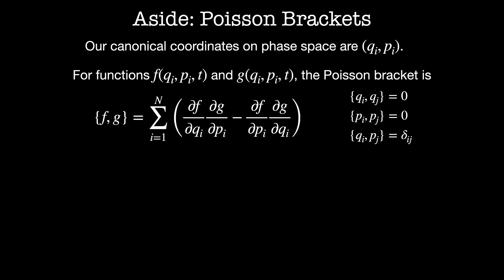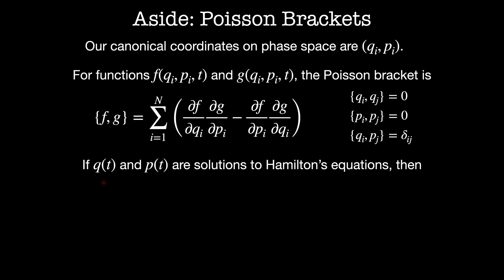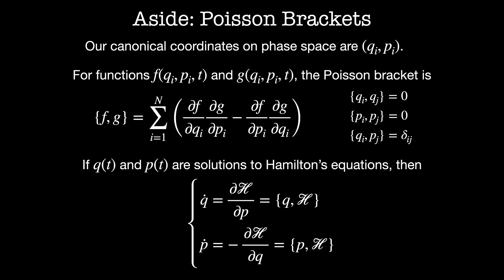If the functions q(t) and p(t) are solutions to Hamilton's equations, then q dot equals dH/dp and p dot equals minus dH/dq by definition. The first equation here is equal to the Poisson bracket of q with the Hamiltonian: plugging in q for f and H for g, dq/dq times dH/dp is just dH/dp, and the second term dq/dp times dH/dq is zero. The second equation is equal to the Poisson bracket of p with the Hamiltonian — the first term is zero because dp/dq is zero, but the second term gives minus dp/dp, which is one, times dH/dq.